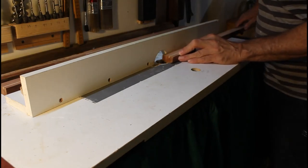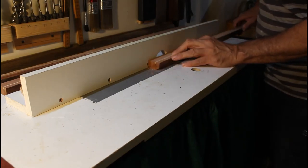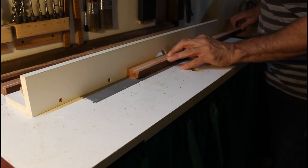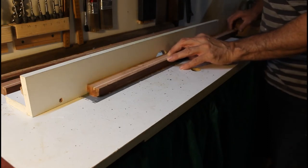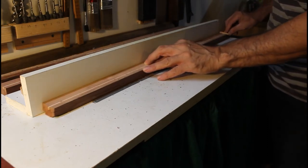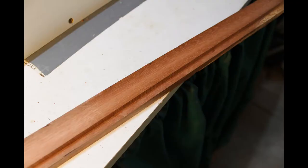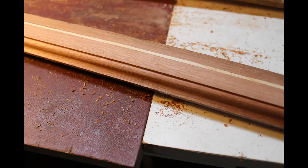I then set up my router table to cut the square reveal in the back of the frame to house the glass and mat board. This was done over a few passes, increasing the depth each time. I then also used an OG bit to cut a nice decorative inner edge on the frame.